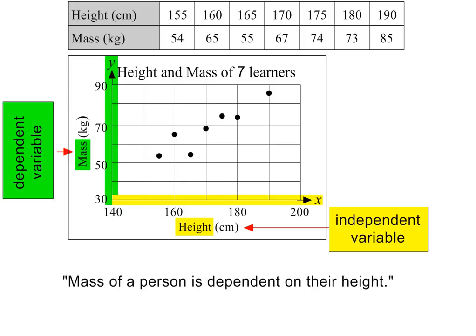The reason mass is the dependent variable is because the mass of a person depends on their height. They will normally indicate which variable is which by using an x and a y in the table.